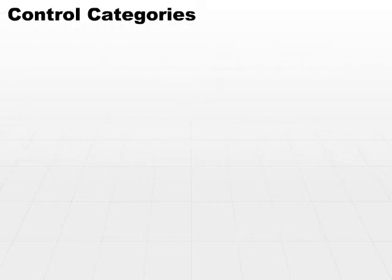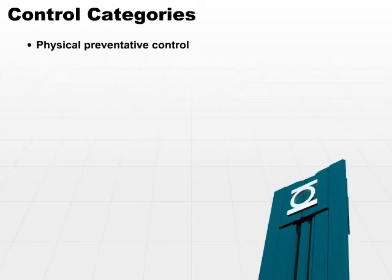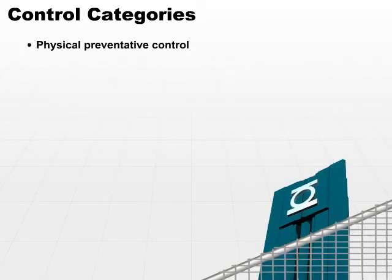Let's take a further look at some control categories and types. For example, we could have a physical preventative control. You recall earlier we talked about physical access controls — those are the controls that stop us from physically touching some object. And a preventative control is a control that stops us from doing something before it occurs.